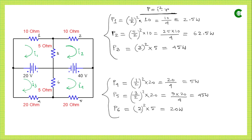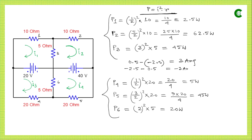For the shared 5 ohm resistor (P3), we need the net current. With i1 = 0.5 A and i2 = −2.5 A, from the first loop perspective: i1 − i2 = 0.5 − (−2.5) = 3 A. From the second loop: i2 − i1 = −2.5 − 0.5 = −3 A. Both give 3 A in magnitude, so P3 = (3)² × 5 = 45 W.